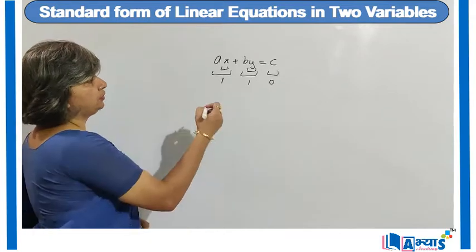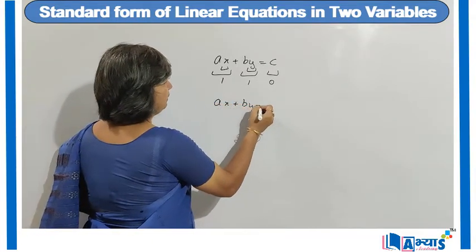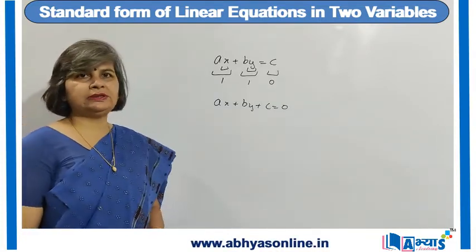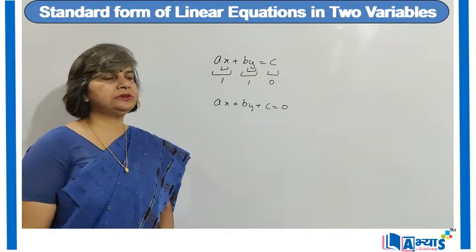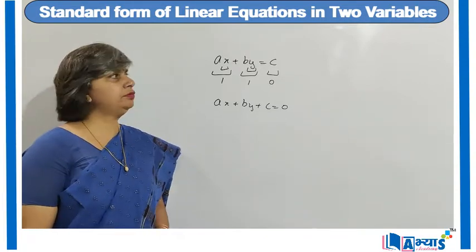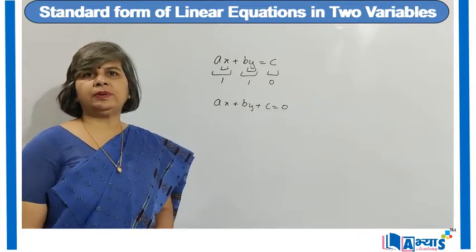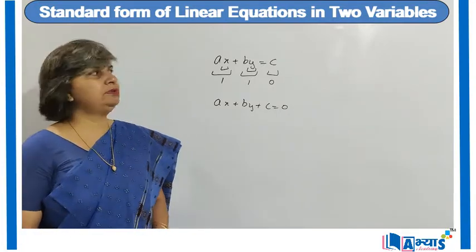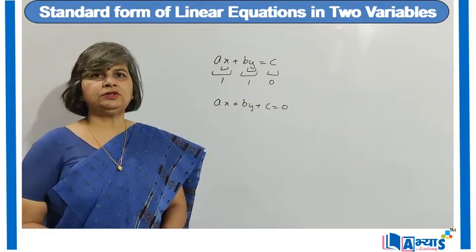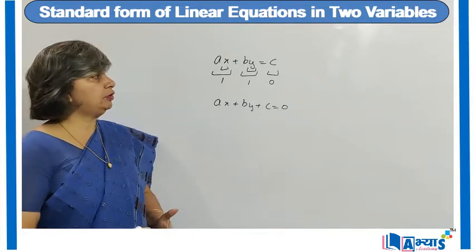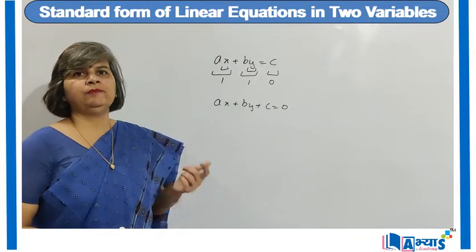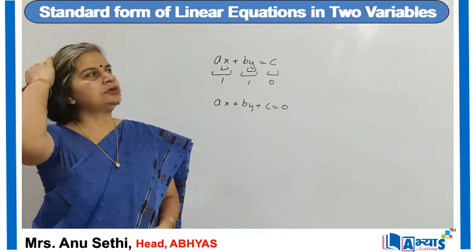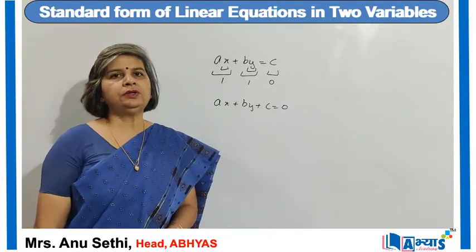The standard form of a linear equation in 2 variables is Ax plus By plus C is equal to 0. That means all the terms will be on the left hand side and the right hand side should have 0. Whenever we want to compare a linear equation with the standard form, we will first bring it into standard form — that is, convert it so the right hand side is 0. Then the coefficient of x is considered as A, the coefficient of y as B, and the constant term as C.